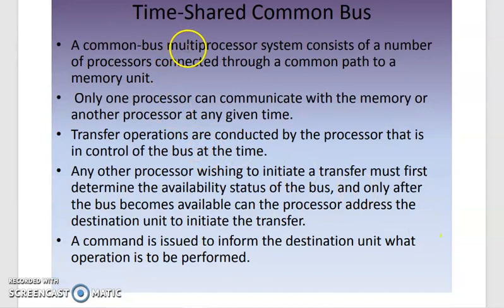The common bus consists of a number of processors connected through a common path to a memory unit. We have multiple processors connected through a single common bus — this is a time-shared common bus. Only one processor can communicate with the memory or another processor at a given time.